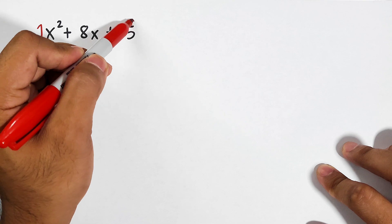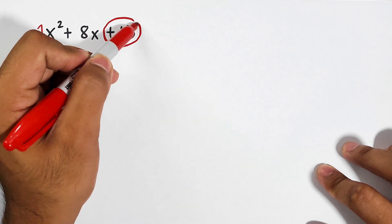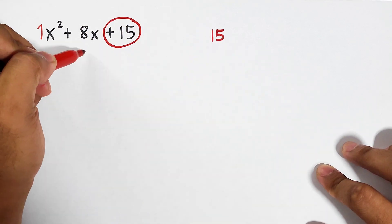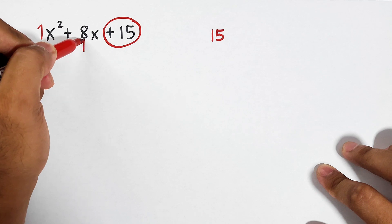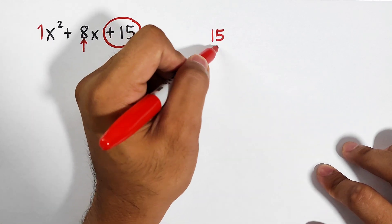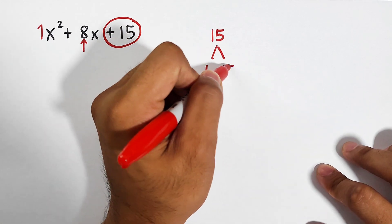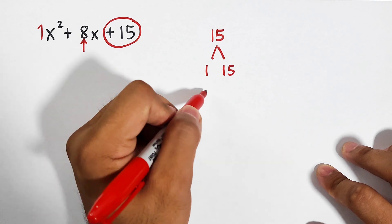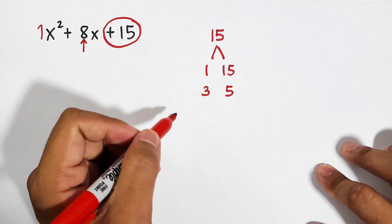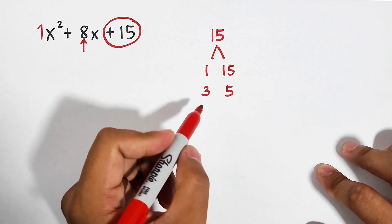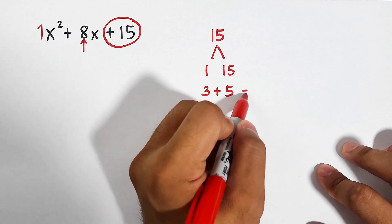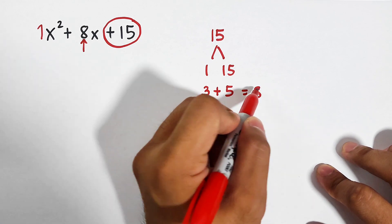We will start with 15. What we need to do is think of the factors of 15 that will add up to positive 8. The factors are 1 times 15 and 3 times 5. We will choose 3 times 5, because when we add 3 and 5, it will give us 8.